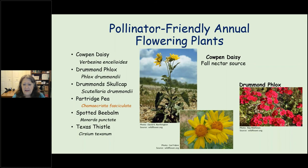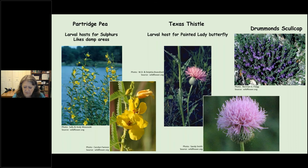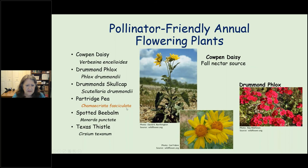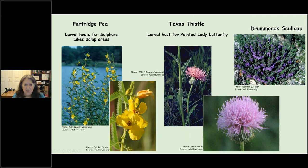For flowering plants: cow pen daisies are a good fall nectar source, and we want to encourage fall blooms since fewer plants bloom then. Drummond phlox are lovely. Partridge pea is a cute plant for wet spaces and a larval host. Texas thistle is great but plant it near your fence away from foot traffic. Drummond skullcap is short, good for borders, and blooms for a fairly long time.